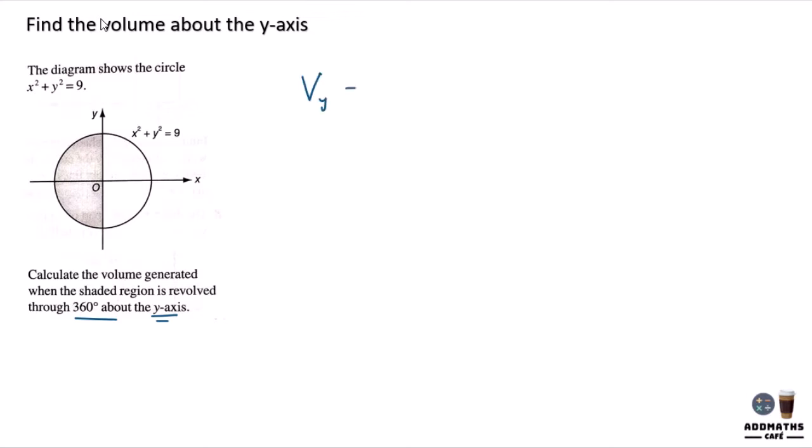So the volume formula for y-axis will be π times x squared dy. And you know that this is from this part to this part. So it is a y-intercept. Y-intercept means x equal to 0.